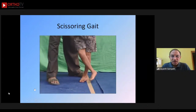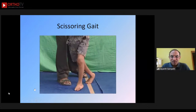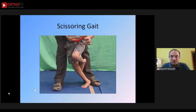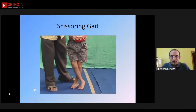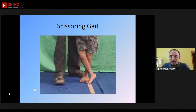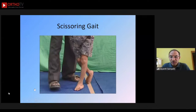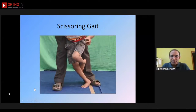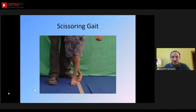Another common gait pattern is scissoring gait — there are two reasons for this. In young children it could be due to spasticity in the adductors; in older children it could be because of hip flexion and knee flexion associated with hip internal rotation, which can also result in a scissoring type gait pattern.